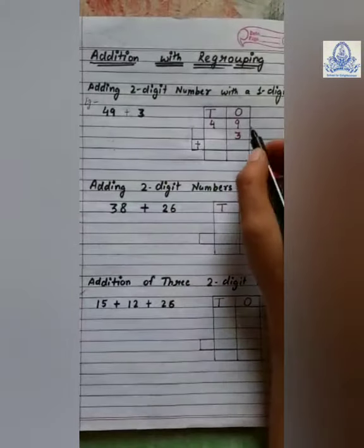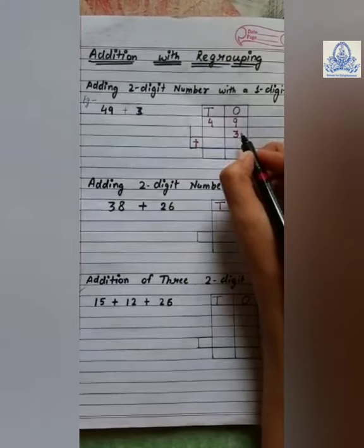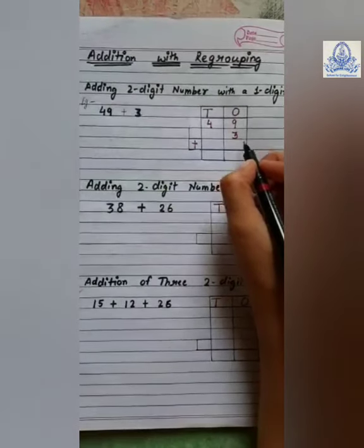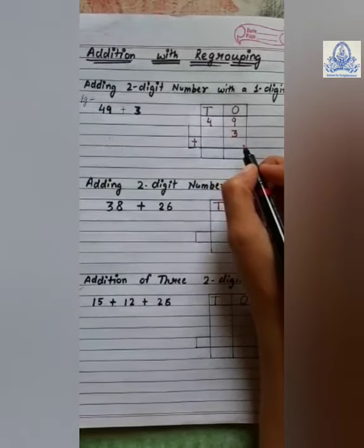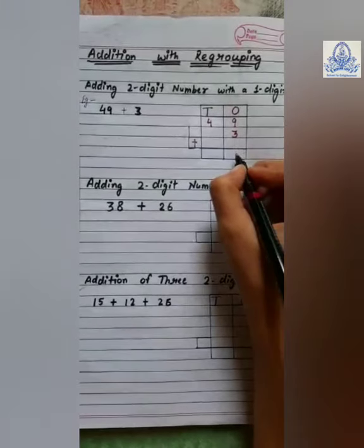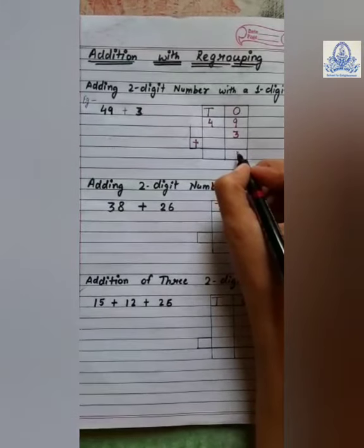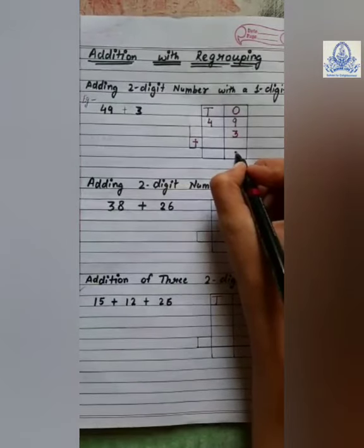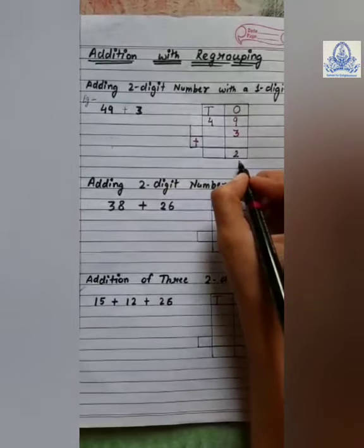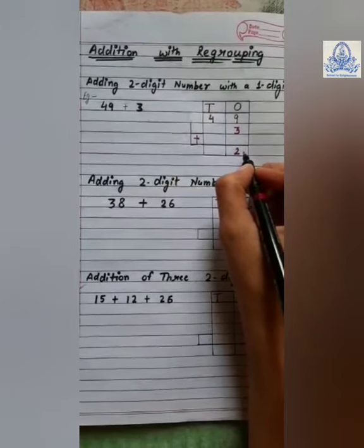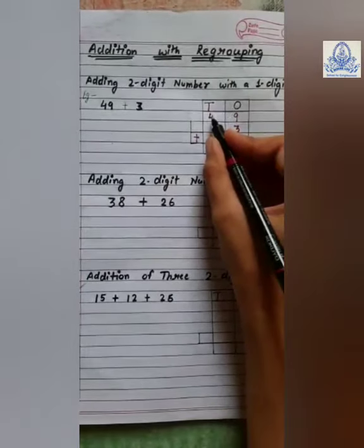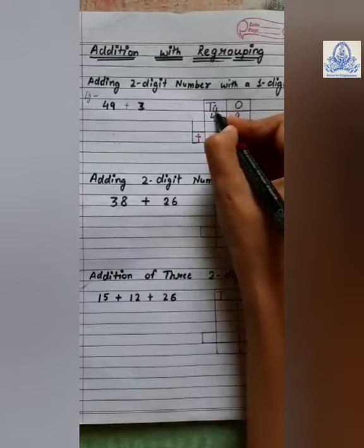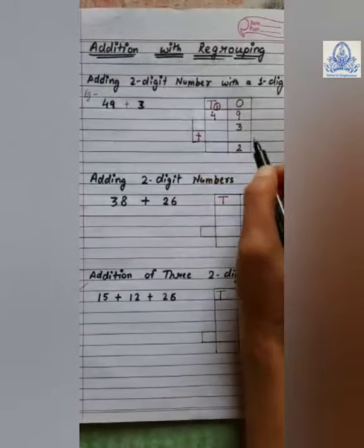Now we have to add. Nine plus three is twelve. Twelve is a two-digit number. Two will be written at ones place and one will be transferred to tens place. So, here, one is transferred.